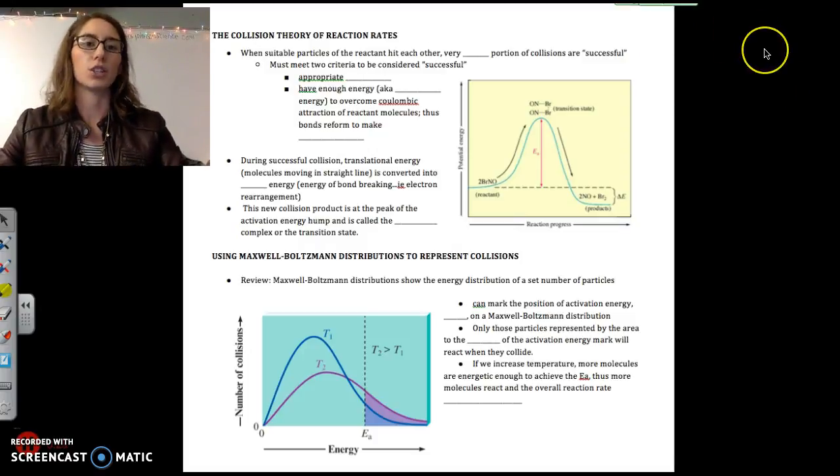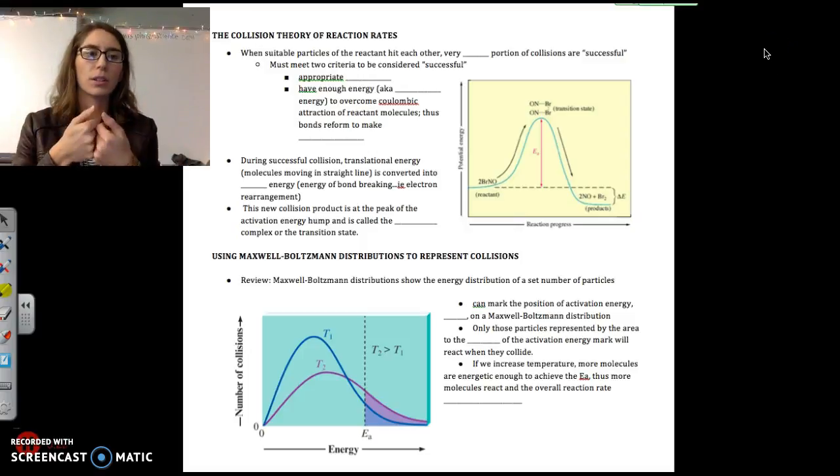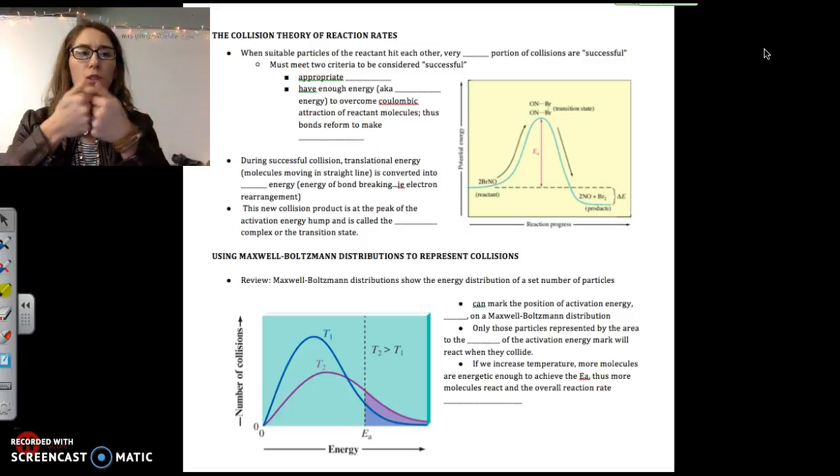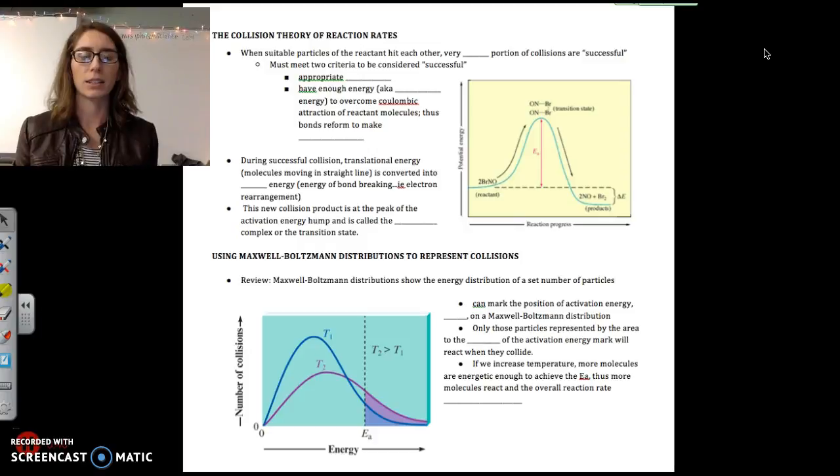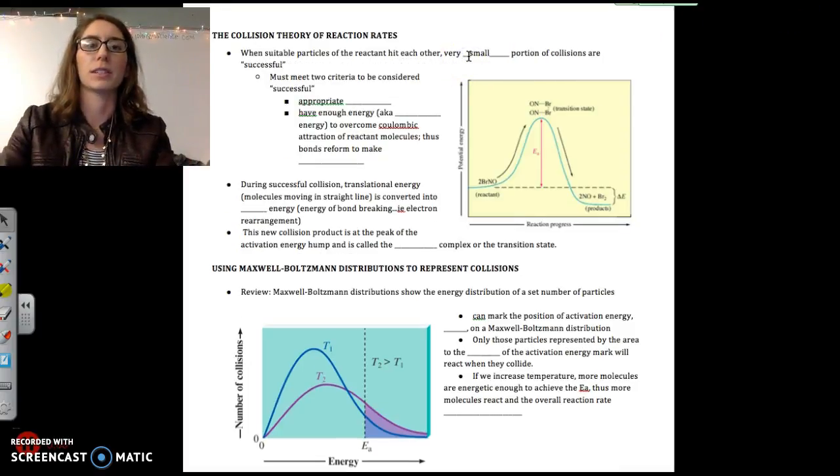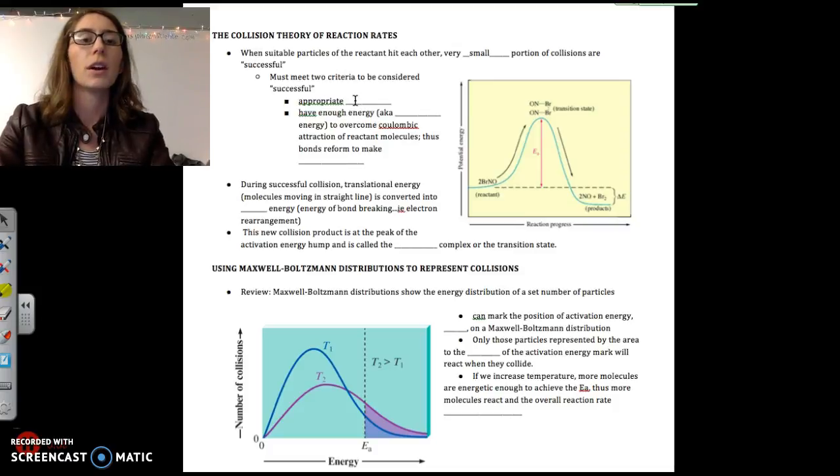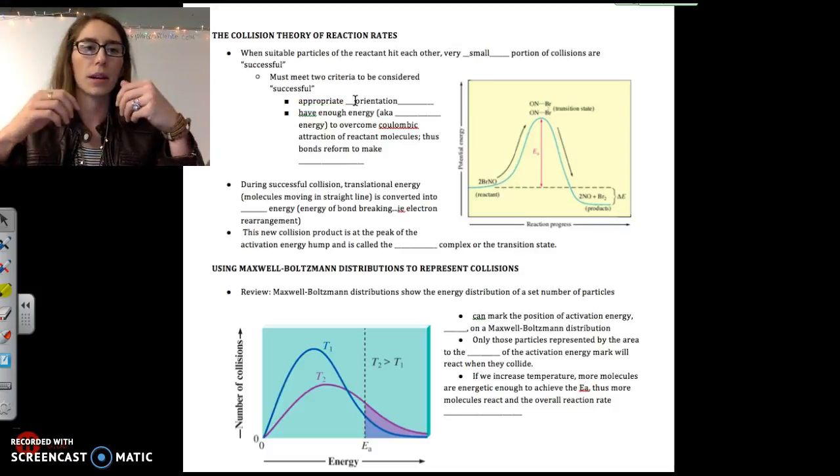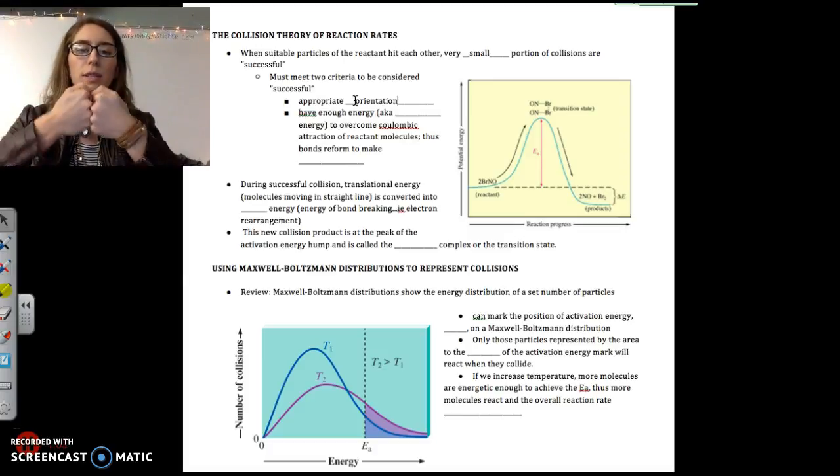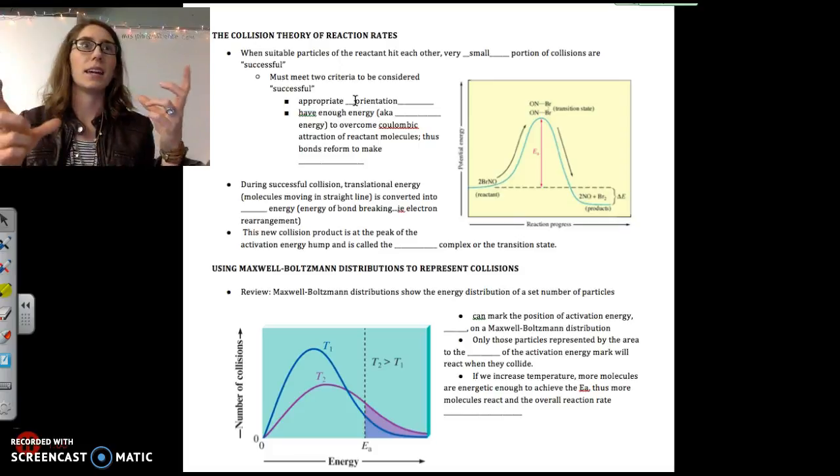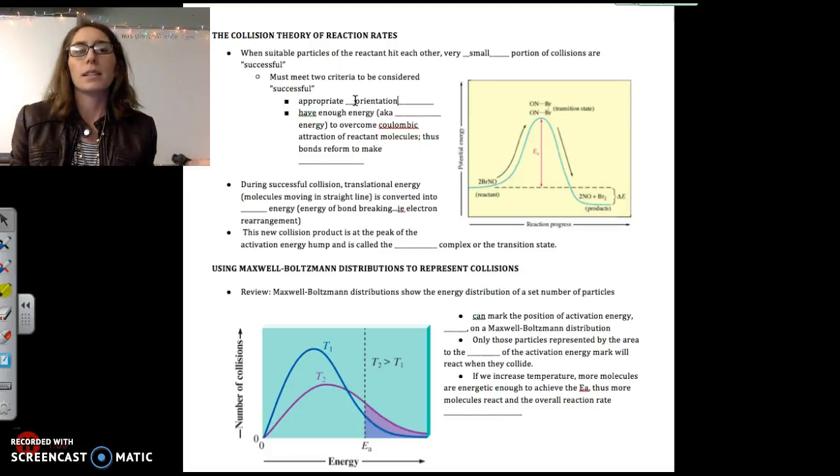So we are starting off with collision theory of reaction rates. We know that molecules are colliding during chemical reactions, but what we don't tend to think about is how often those actual collisions result in rearranging the molecules to form products. We find that not many collisions are quote unquote successful. Most of the time molecules just hit each other and bounce back and there's no product formed. So a very small portion of the collisions are successful.